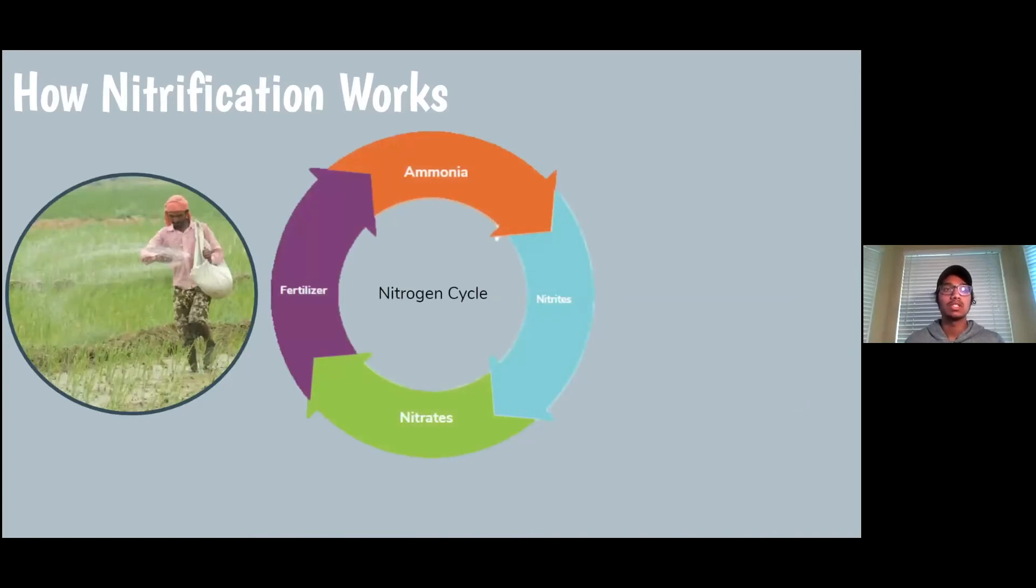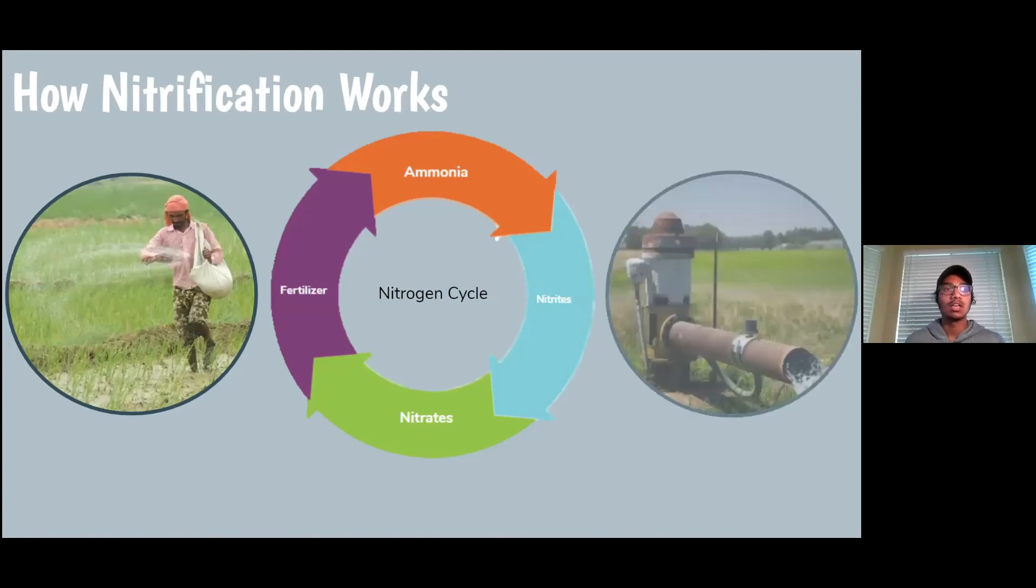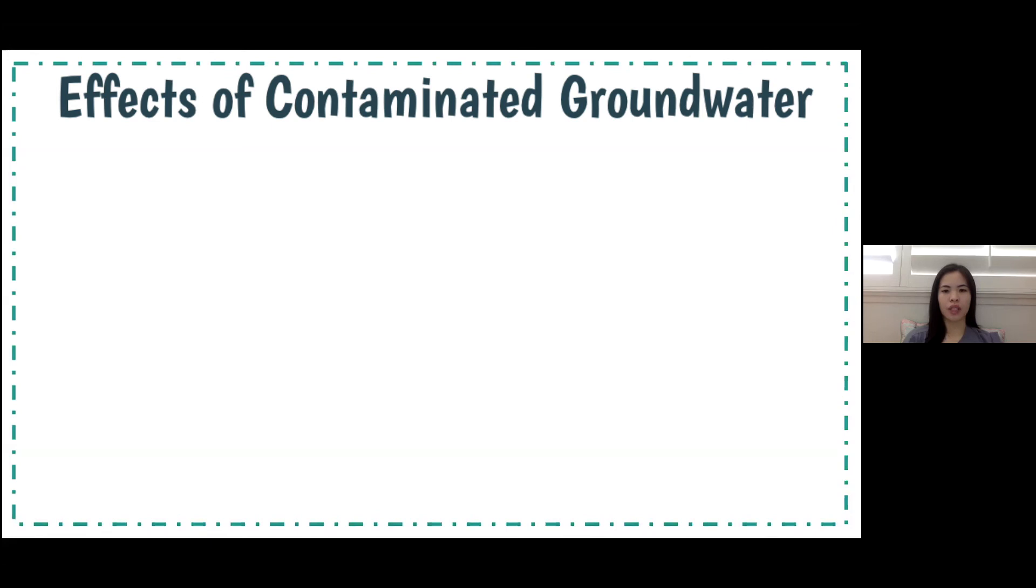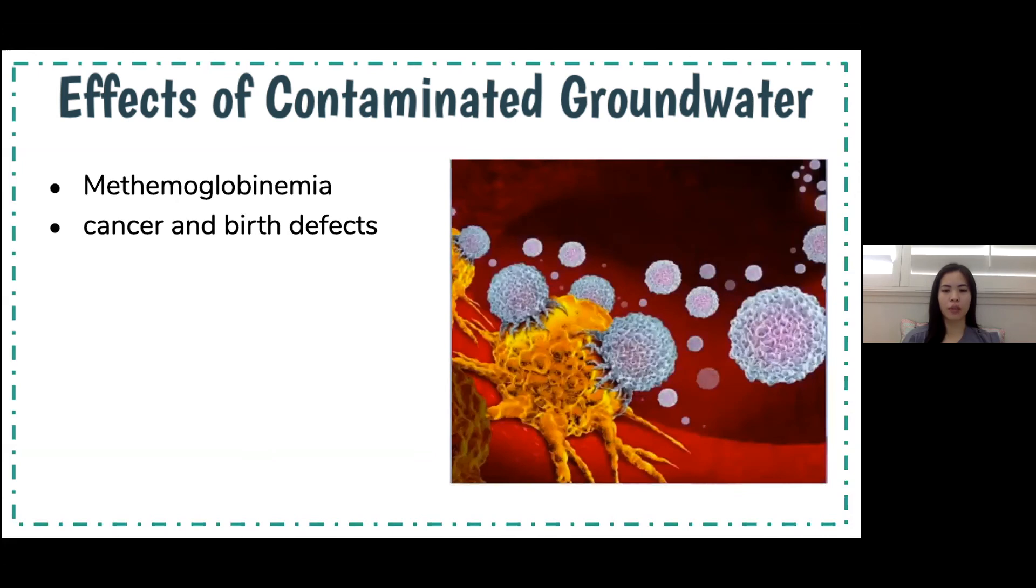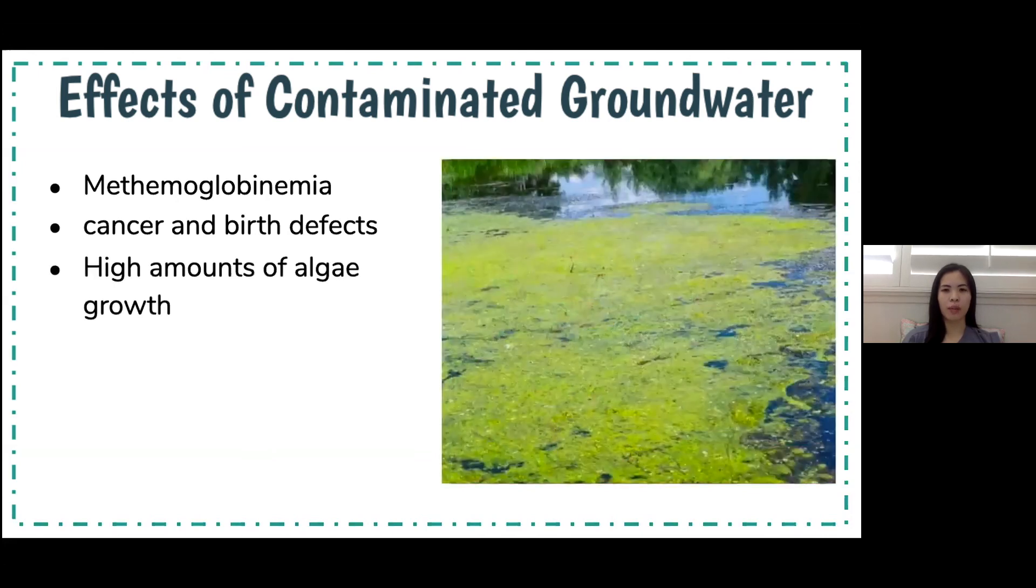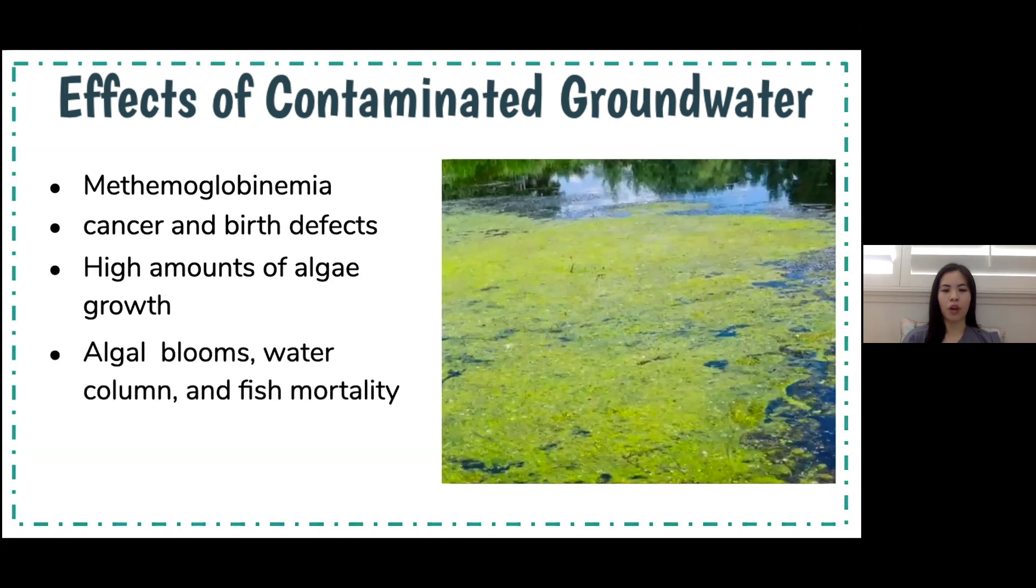Farmers grow crops using nitrate fertilizers to stimulate growth, and the resulting runoff water is contaminated because there's extra fertilizers that isn't used by the plants. The ammonia in the water breaks down into nitrites and then nitrates, where it contaminates drinking water and other water supplies. Because of these high nitrate levels, the contaminated groundwater causes methemoglobinemia in babies and causes cancer and birth defects in the community. It also harms the environment by stimulating large amounts of algae growth, which causes algal blooms, water column, and fish mortality.